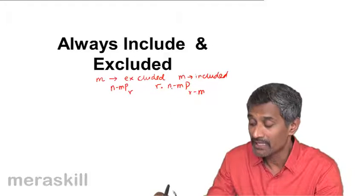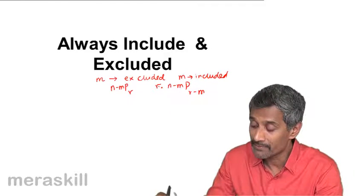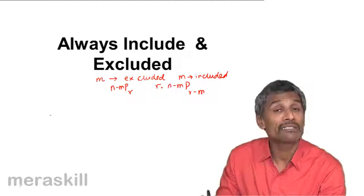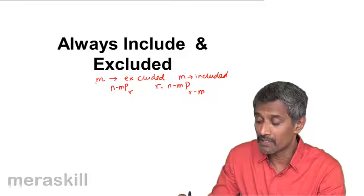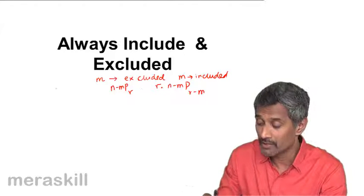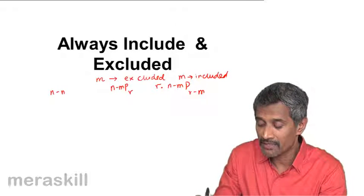First you select them in N minus M C_(R minus M), and then you further arrange them in R ways. Now in much the same way in case of combination, if a particular M term is excluded, then it is going to be N minus M C_R.